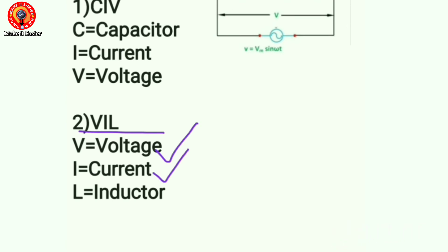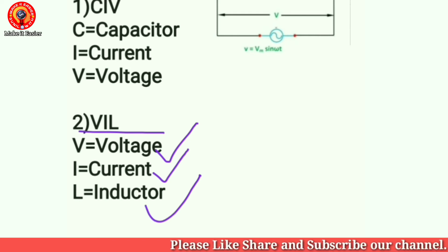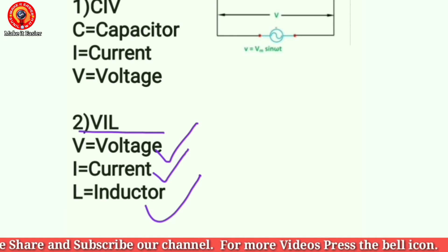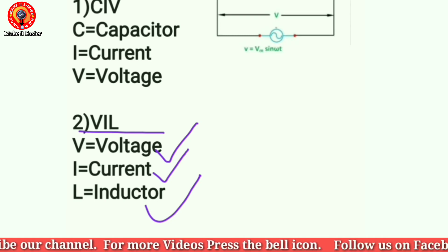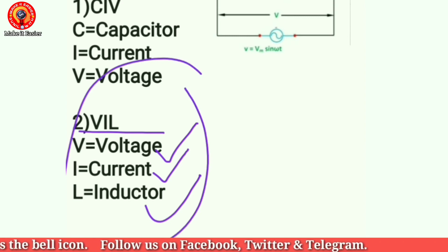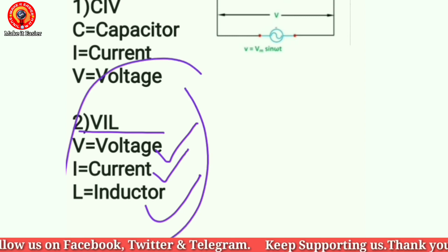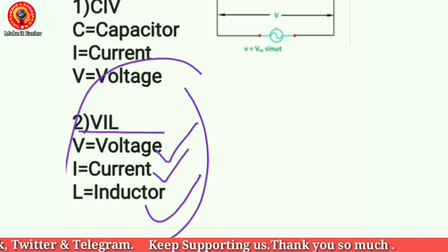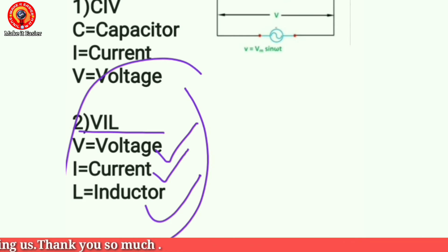Here VIL, L stands for inductor. V is voltage, I is current, and V comes before I. Voltage comes before current, so voltage leads the current, and I, that is current, comes after the voltage, so current lags the voltage.